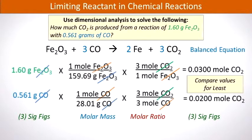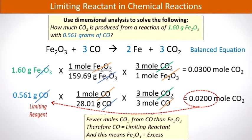Once we obtain these values we compare them to see which is smallest. We get less CO₂ produced when we start with carbon monoxide than when we start with iron(III) oxide. Therefore carbon monoxide is the limiting reactant, and we can only obtain 0.0200 moles of CO₂.